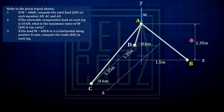Refer to the given tripod shown. For question number 1, if W is 60 kN, compute the actual load on each member or in each leg. And number 2, if the allowable compressive load on each leg is 50 kN, what is the maximum value of W?